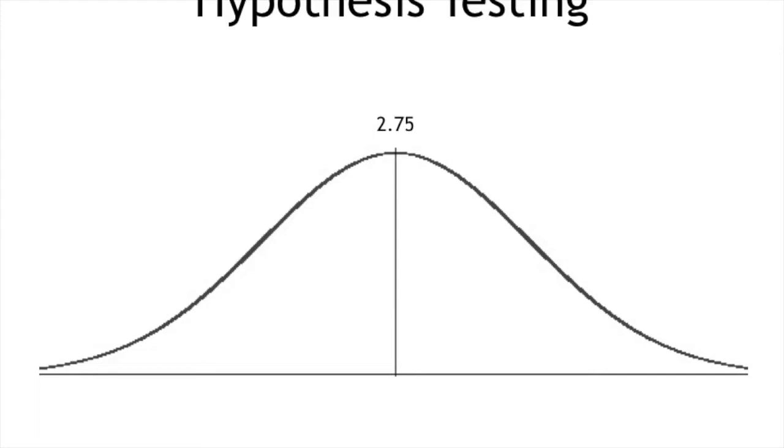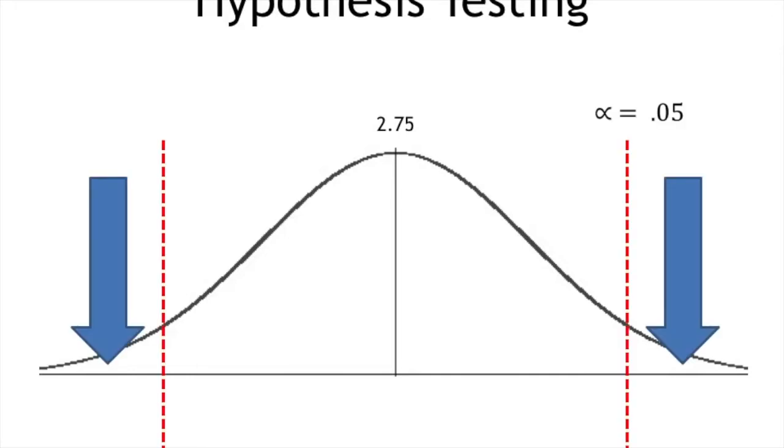Notice how changing the significance level changes the percent of samples that are acceptable in my sampling distribution of the mean. If I set a significance level of 5%, these regions of the distribution will lead to rejecting the null hypothesis. So if my sample is out in either of those tails, I'm going to reject that null hypothesis of 2.75. It would tell us that the sample mean we pulled is very unlikely if that null hypothesis is correct.